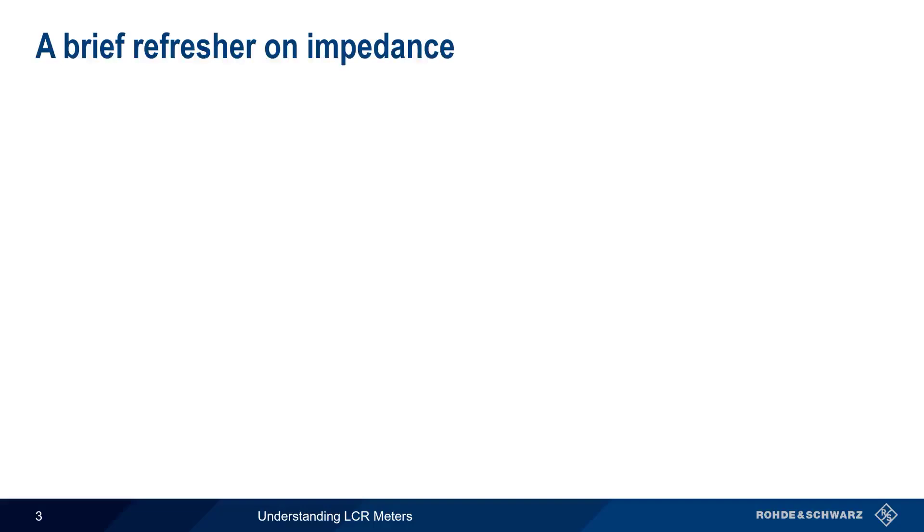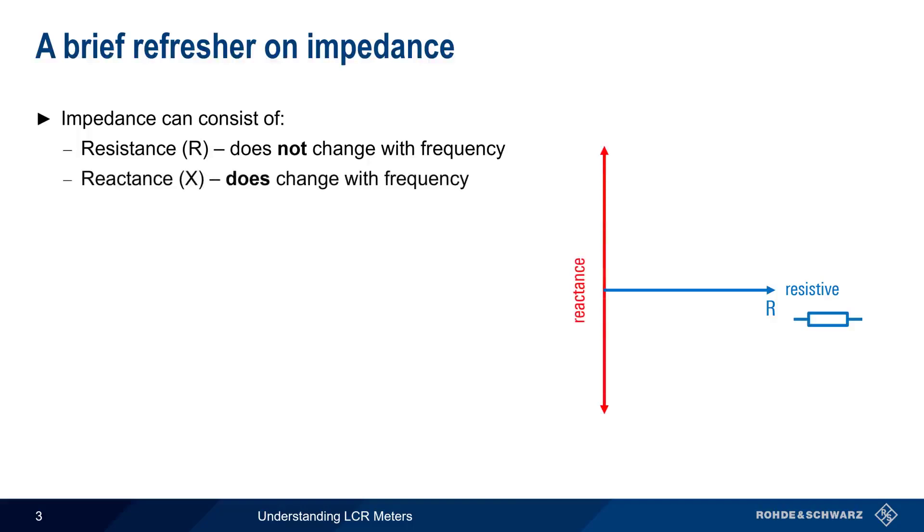Impedance, or the opposition to the flow of current, consists of resistance and reactance. An ideal resistance doesn't change with the frequency of the signal. As you might imagine, this is the kind of impedance normally associated with resistors. The other type is reactance, where the opposition to the current or voltage does change as a function of frequency. Reactance can be further divided into inductive or positive reactance and capacitive or negative reactance. These are, unsurprisingly, most often created by inductors and capacitors.